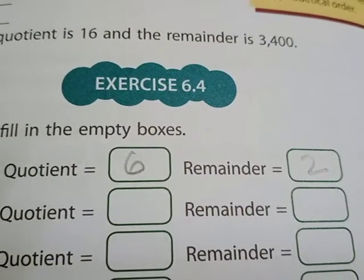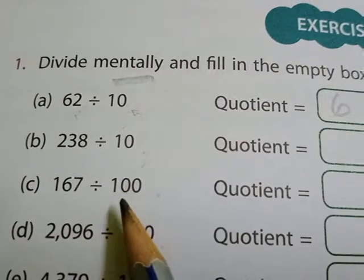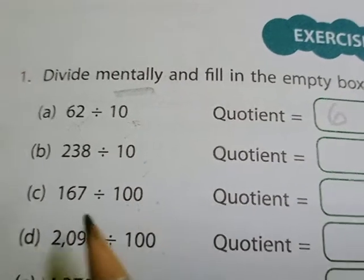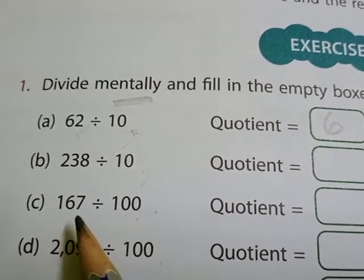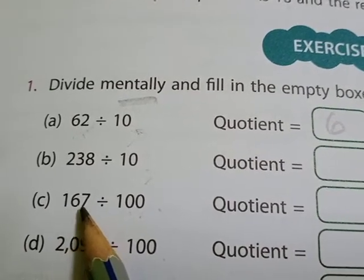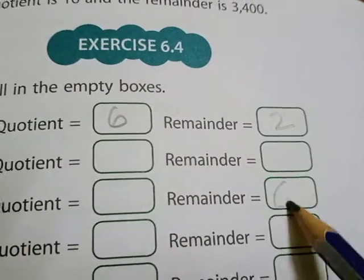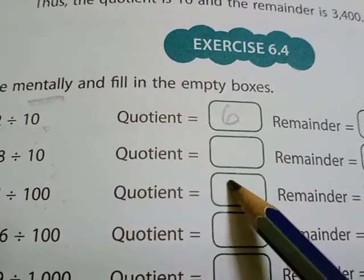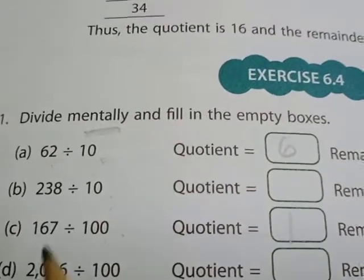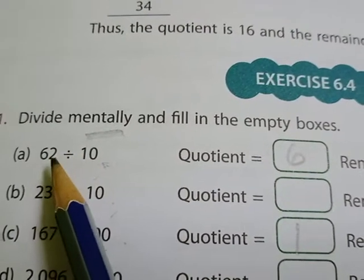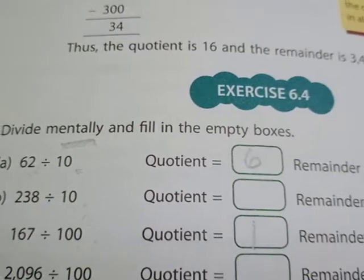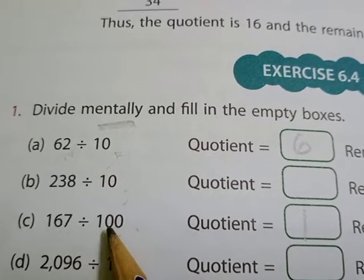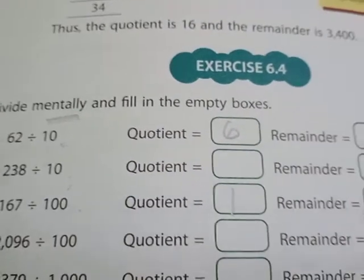Similarly, if you see 100 as the divisor — how many zeros are there in 100? Two zeros. So from the dividend, from the back side, two digits will shift into the remainder, and the remaining digits will be the quotient. If it is 10, from the back side only one digit goes into the remainder.